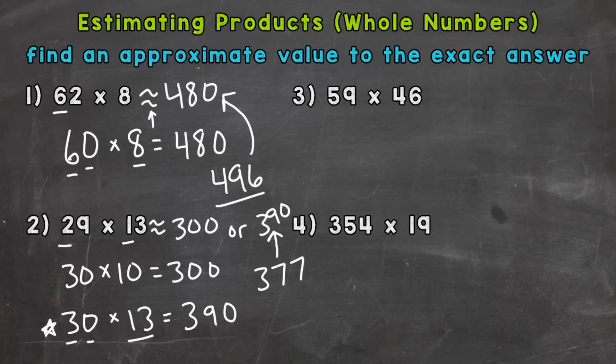Now in the case of number three, front end estimation is going to be our best option, simplest to work with, and just overall our best option like I mentioned. So let's round both to the tens place. So 59 is going to round to 60 times 46 is going to round to 50.